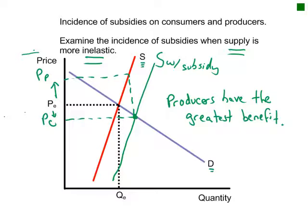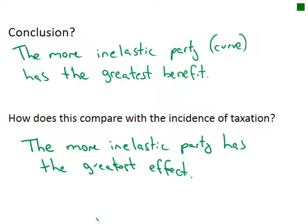So the conclusion: the more inelastic party or curve has the greatest benefit from a subsidy. While we haven't done this with taxation yet, when we do we'll see that the more inelastic party also has the greatest effect — it won't be a benefit in that case, but the same principle applies. We'll revisit this when we do taxation.